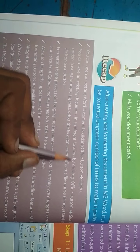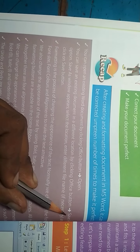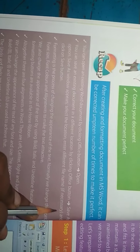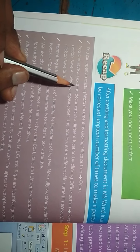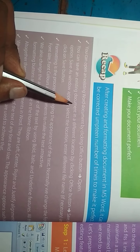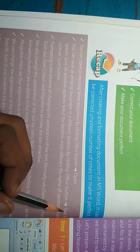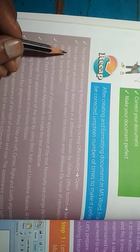Point number two: You can save an existing document in a different location by clicking the Office button and selecting the Save As option. A Save As window appears — select the location, enter a different file name if necessary, and click the Save button. Document save करने के लिए Office button पर click करते हैं, फिर Save As option को click करते हैं।